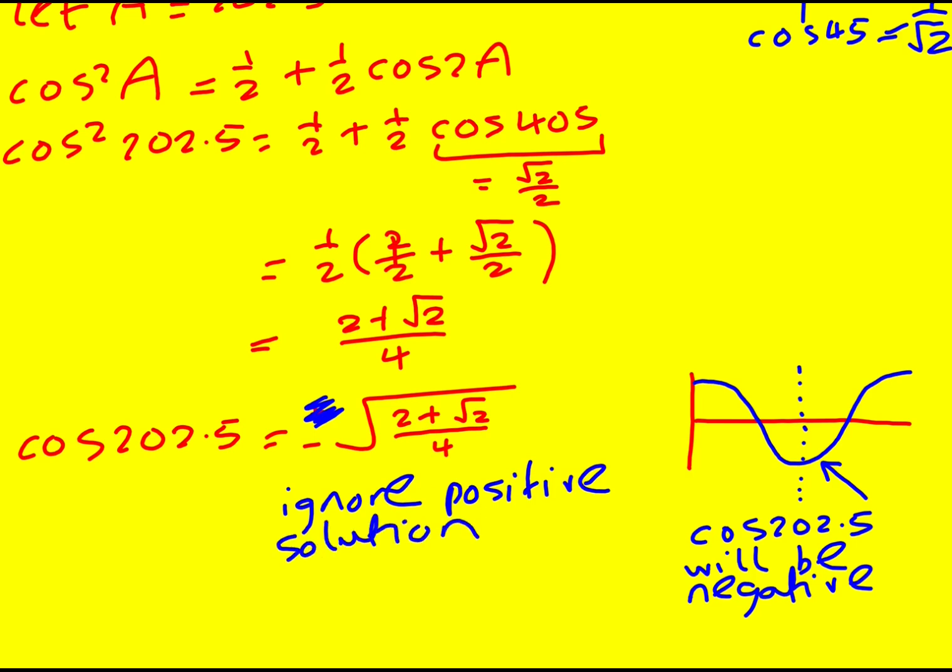Therefore I'm going to ignore the positive solution. That one's been introduced by taking the square root, but it's not actually a real physical solution. We can cancel it down very slightly, so it's going to be minus root 2 plus root 2, but then I can actually take the square root of 4, so we've got this.